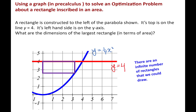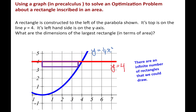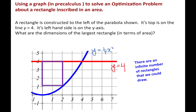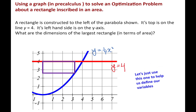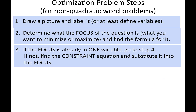Before we do any algebra, let's make sure we understand there's an infinite number of rectangles we could draw. You were given one, but it could look like this, or this, or even this. We'll use one to help us define our variables. You should have done some optimization problems already involving quadratic word problems. This one is not going to be quadratic, and it has a different step 4, but the first three steps are all the same.